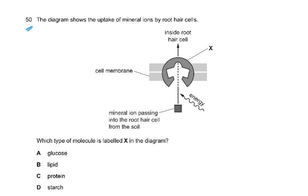Question 50: the diagram shows uptake of mineral ions by root hair cells. A mineral ion is shown passing into the root hair cell from the soil through the cell membrane using energy. This molecule is a channel protein — we have discussed channel proteins and their diagrams in a previous paper.